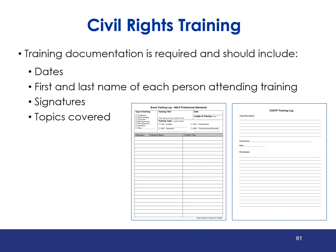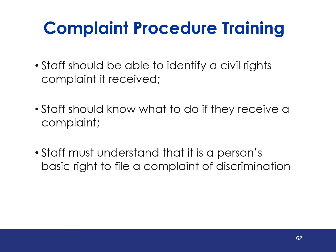Completion of annual training is required to be documented, and documentation should include the date or dates of training, the first and last name of each training attendee, their signatures, and a description of the topics covered. Ensure that each staff member or volunteer is able to identify a civil rights complaint if received, knows what to do if a complaint is received, and understands that it is a person's basic right to file a complaint of discrimination.